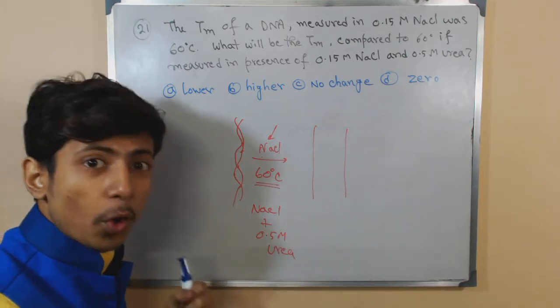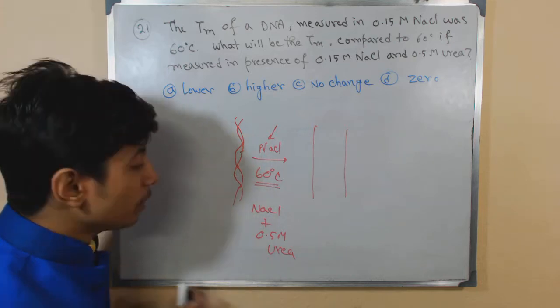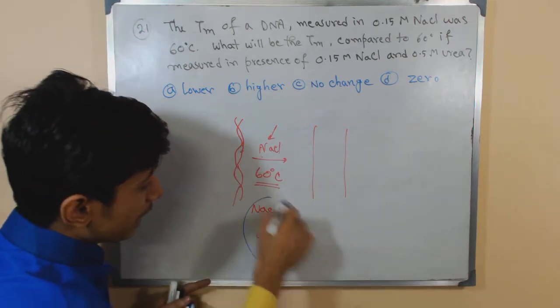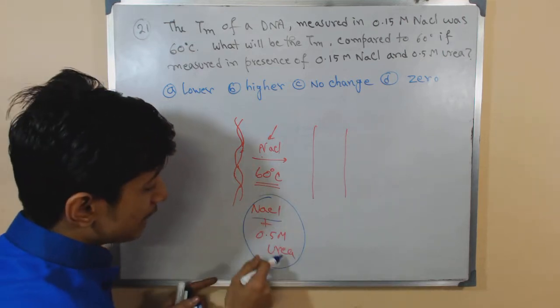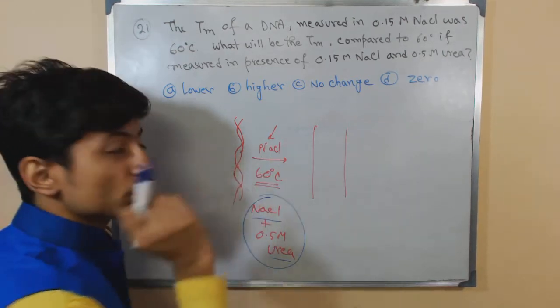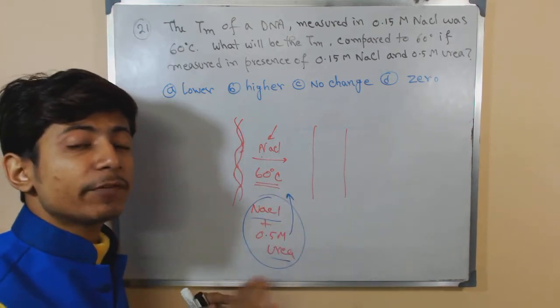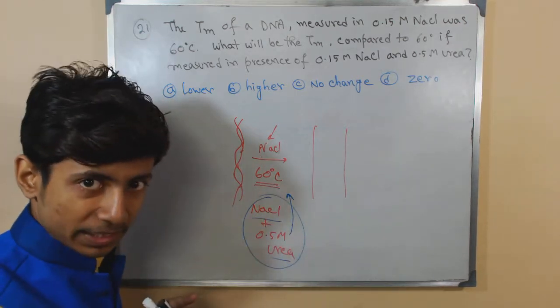Strand separation will be encouraged by the presence of NaCl and urea more than the presence of only NaCl. So now we are helping those strands to be separated even faster than the previous time.